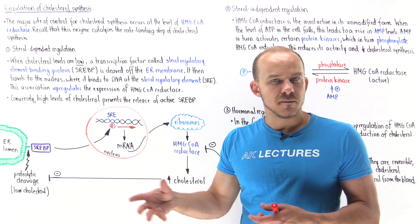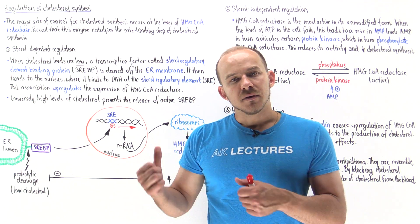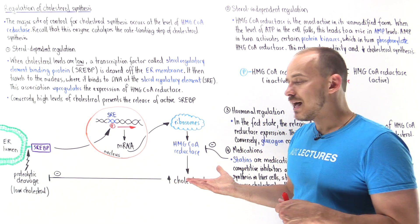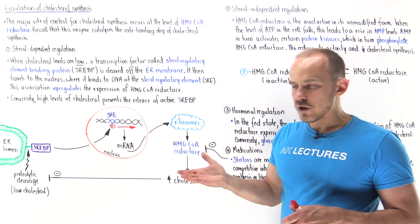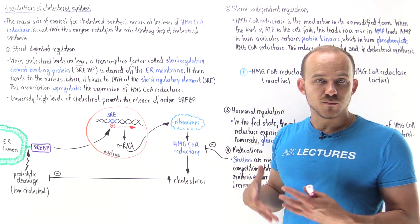Insulin does a bunch of things. For example, insulin stimulates cells to reuptake glucose from the blood. But it also acts on liver cells and other cells in the body to upregulate the expression of HMG-CoA reductase so that the cells can produce more cholesterol.